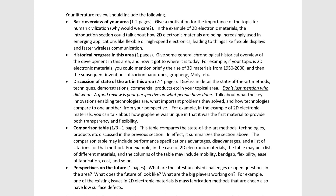The next section is the discussion of the state of the art, and this is two to four pages because it will be the largest chunk of the review paper. It's a discussion of state-of-the-art methods in detail — they could be methods published in academia, industry devices, techniques, demonstrations, or commercial products in your topical area.